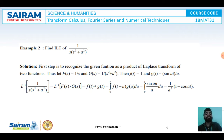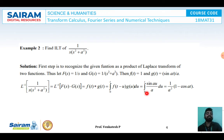After replacing f and g, we get the integral from 0 to t of sin(au)/a du. Taking the constant 1/a outside and integrating sin(au) with respect to u and applying the limit, we get 1/a² into (1 minus cos(at)) as the required solution.